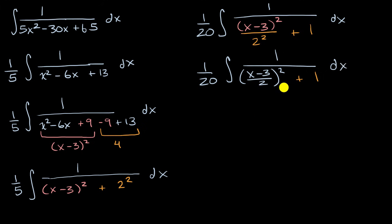Now the u substitution is pretty clear. I am just going to make the substitution that u is equal to x minus three over two, or u is equal to one-half x minus three-halves. And du is going to be equal to one-half dx.